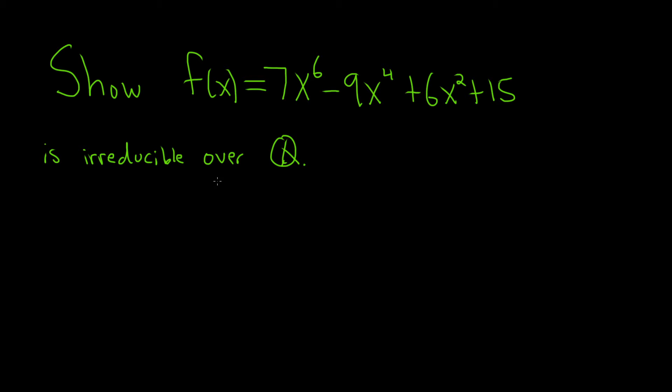In this problem, we have a polynomial, and we have to show it is irreducible over the rational numbers. To do that, we're going to use something called the Eisenstein criterion.